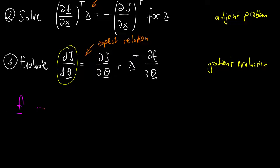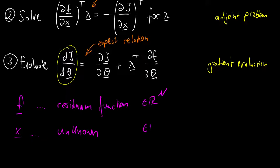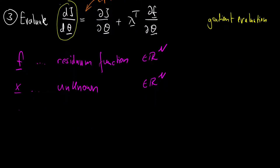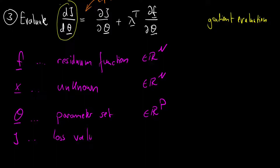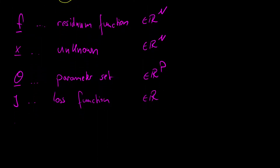What are the key quantities? We have vector-valued f, our residuum function defining the non-linear system, which is n-dimensional. Then x, our primary unknown, also an n-dimensional vector. Then theta, our parameter set, which is a p-dimensional vector with p different parameters. Then j, our scalar-valued loss function — that scalar nature is important. And finally lambda, our adjoint variable, which always has the same shape as the primary unknown, so it is also n-dimensional.